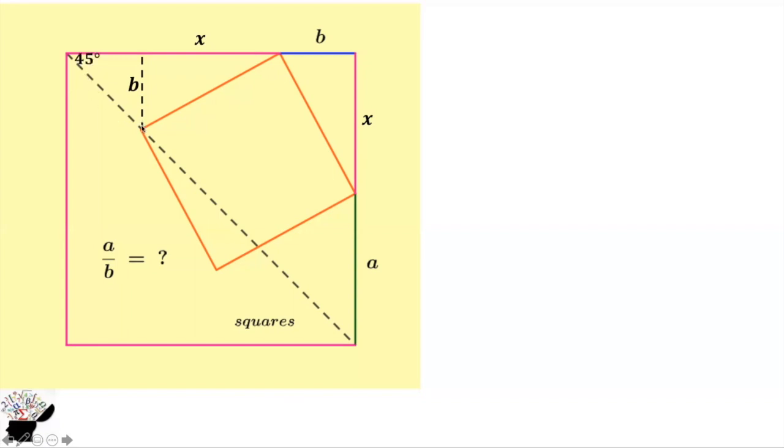So in fact, we can extend this line. Then we can also have the length to be B. And if this is B, this side will automatically be B. So this side is B.